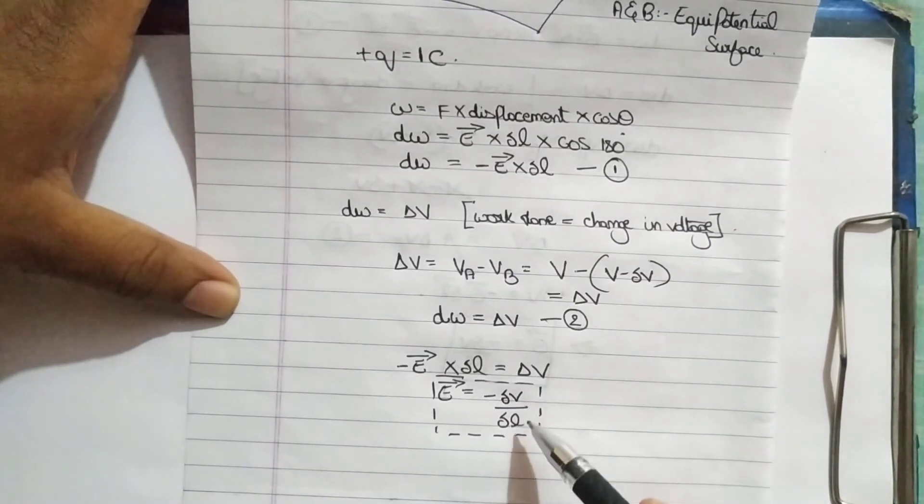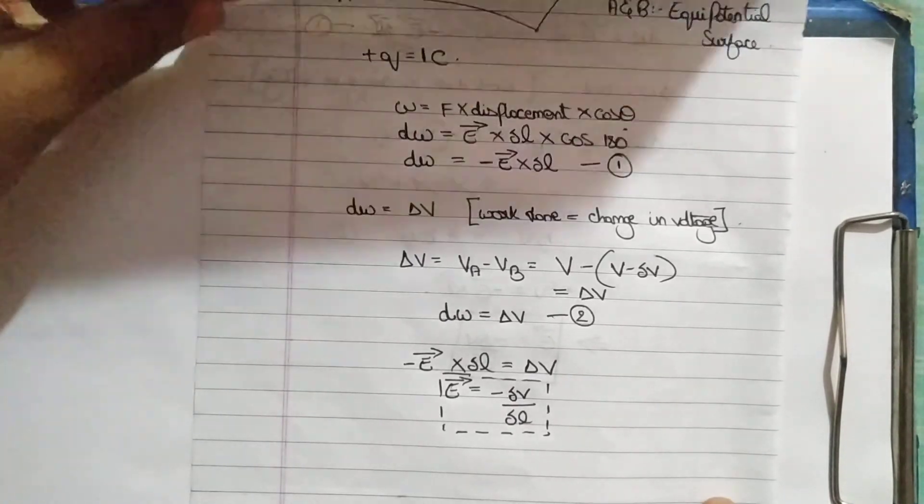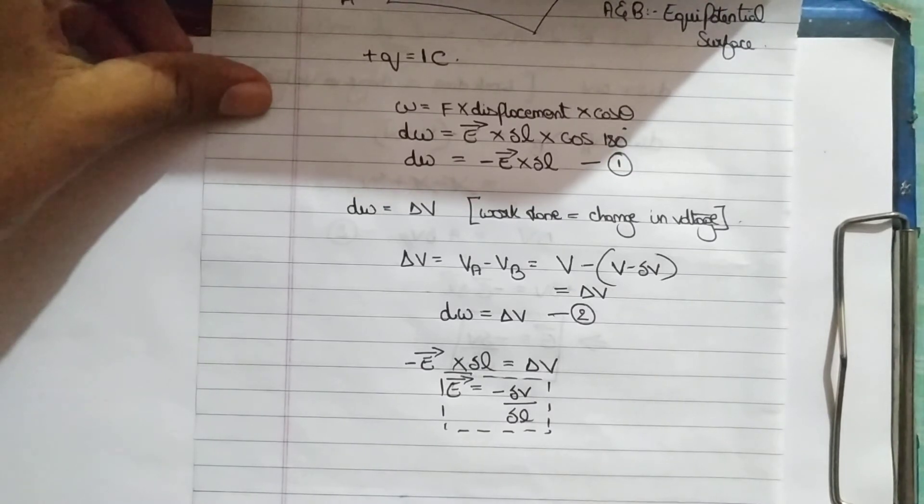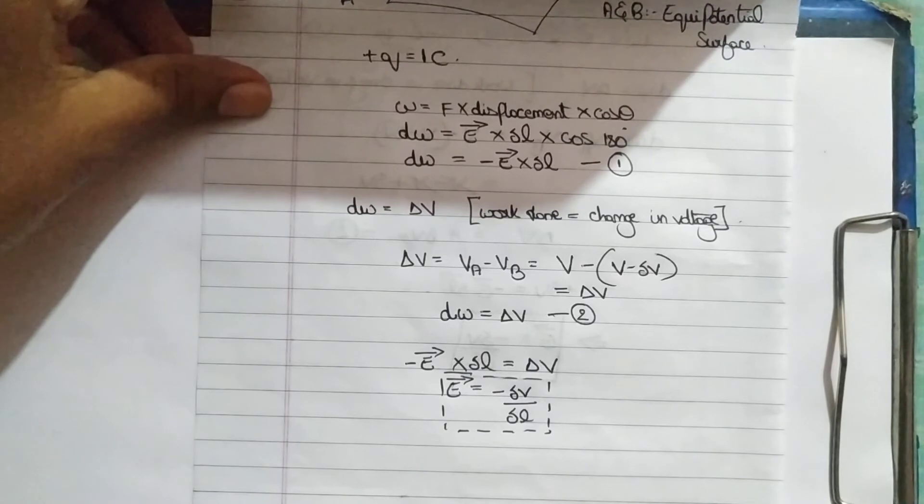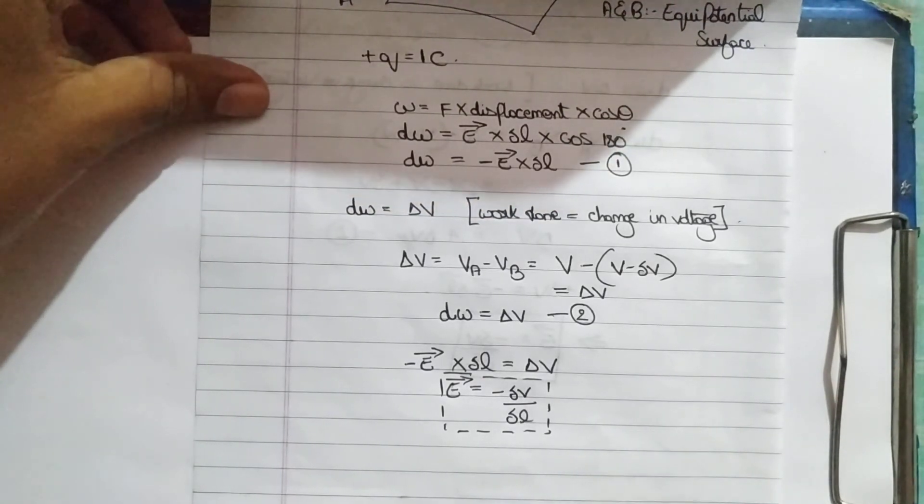Change in potential per unit length is nothing but electrostatic force. This describes electrostatic force. And as you can see, the negative sign shows that the direction of the electrostatic field is in the opposite direction, which is decreasing in potential. That's it. This completes.